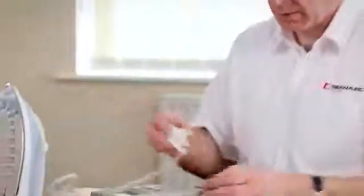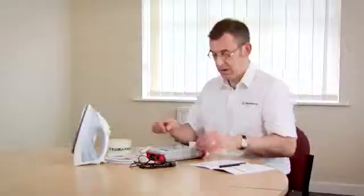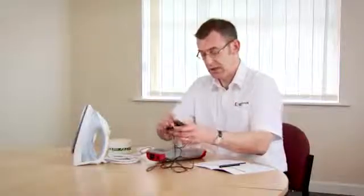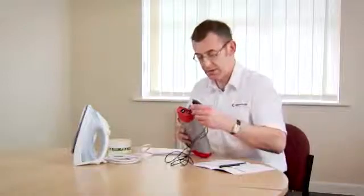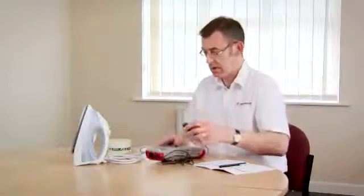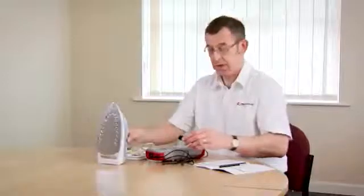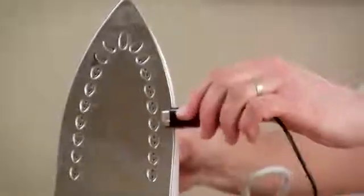We connect up our Class 1 appliance to the test socket, we connect the Earth Continuity test lead into the tester, and the other end of the test lead goes onto some exposed metal parts.